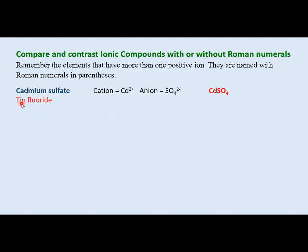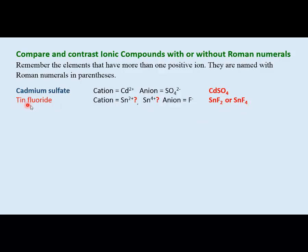The name 'tin fluoride' is marked as incorrect because tin can have various charge states (+2 or +4), and no Roman numeral was given. Without a Roman numeral, there are at least two possible formulas: tin(II) fluoride would be SnF₂ (fluoride is -1, so two fluorides balance the +2 tin), while tin(IV) fluoride would be SnF₄. The name 'tin fluoride' doesn't specify which compound, making it incorrect.